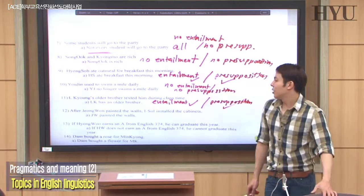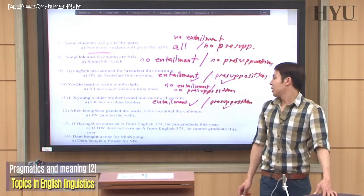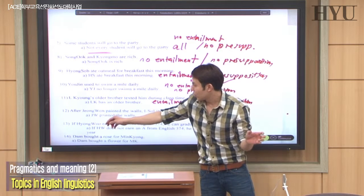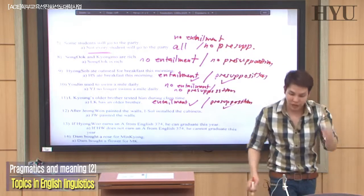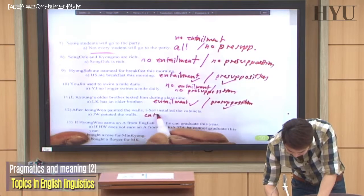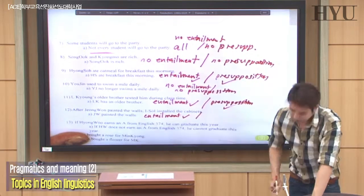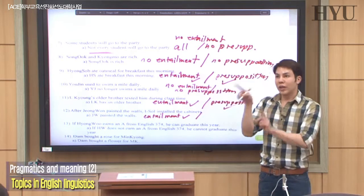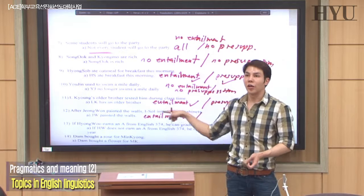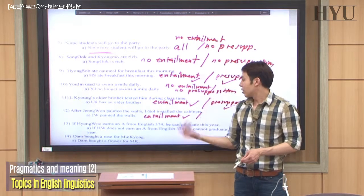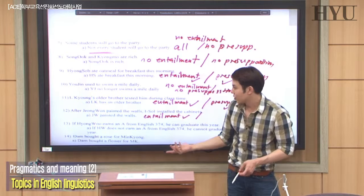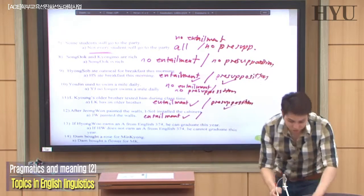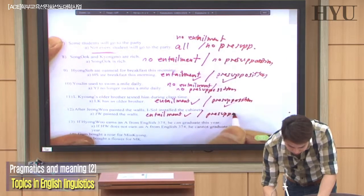Number twelve: 'After Jungwon painted the walls, Esau installed the cabinets.' Does it entail that Jungwon painted the walls? Yes, for sure. Entailment yes. For presupposition: when you make a question on the main clause — 'Did Esau install the cabinets after Jungwon painted the wall?' — the presupposition still holds. So presupposition yes.